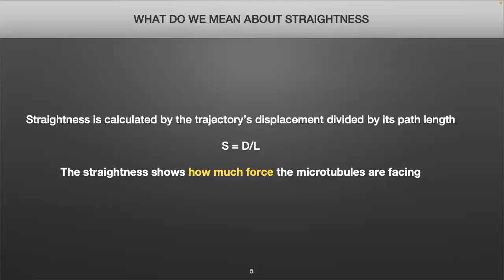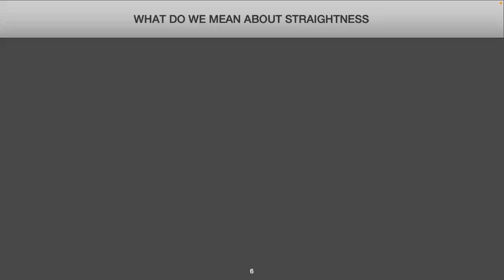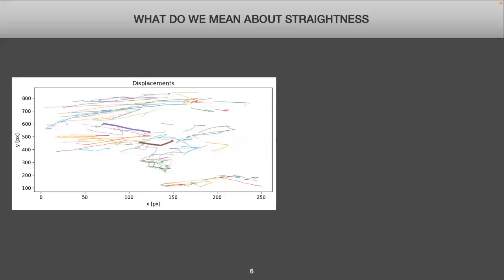One of the first things we wanted to analyze was the straightness of the track. Straightness is the displacement — the difference between the final and initial point — divided by its path length, which is the total distance traveled. The straightness can tell us how much force is being applied to the tips, whether that be external or internal. Straightness is calculated on a scale between zero and one, where one is a perfect straight line. Here we have a graph of the cell's displacements, where the x-axis is the x position and the y-axis is the y position of the trajectories.